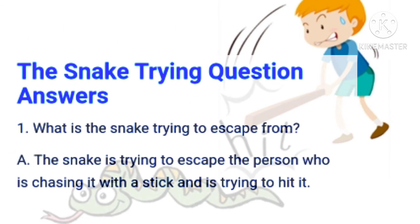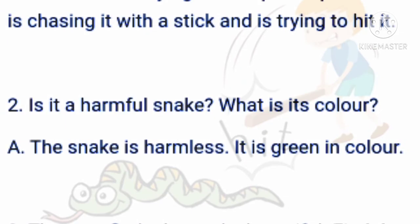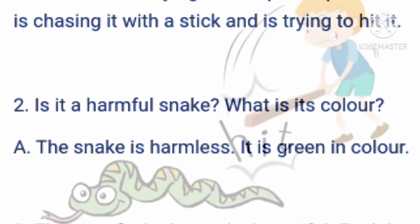Now we can solve the textual questions. Question one: What is the snake trying to escape from? Answer: The snake is trying to escape from the person who is chasing it with a stick and is trying to hit it. Second question: Is it a harmful snake, and what is its color? Answer: The snake is harmless, and it is green in color.